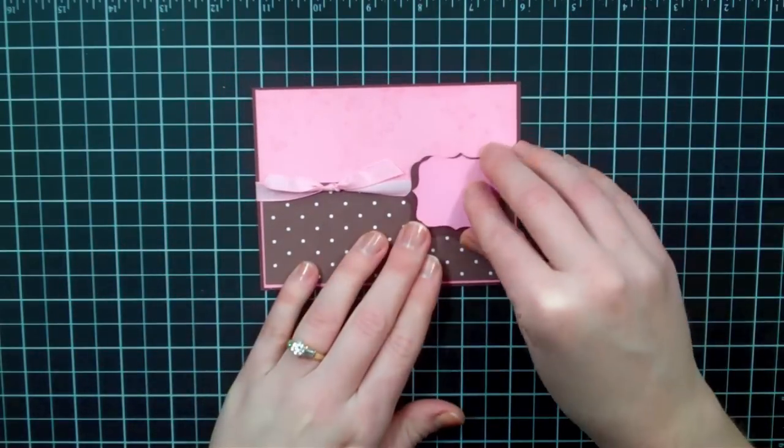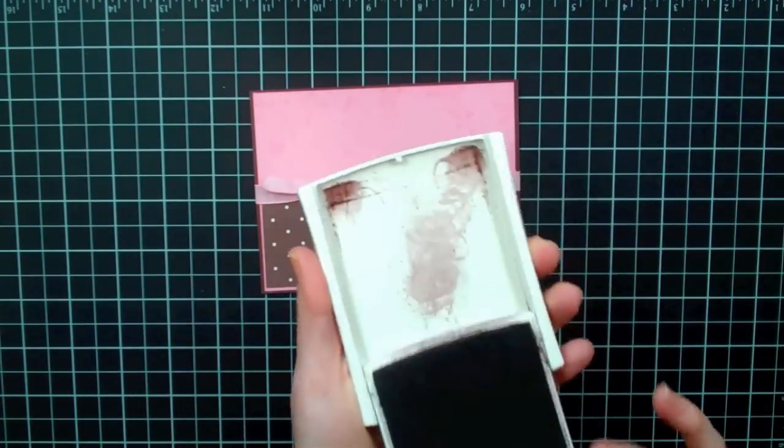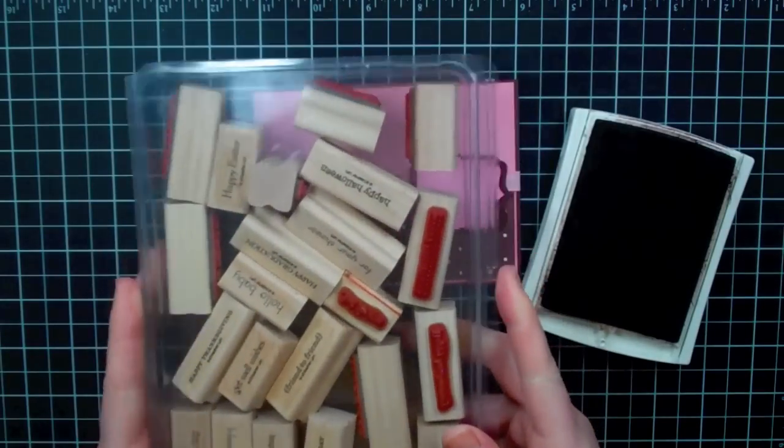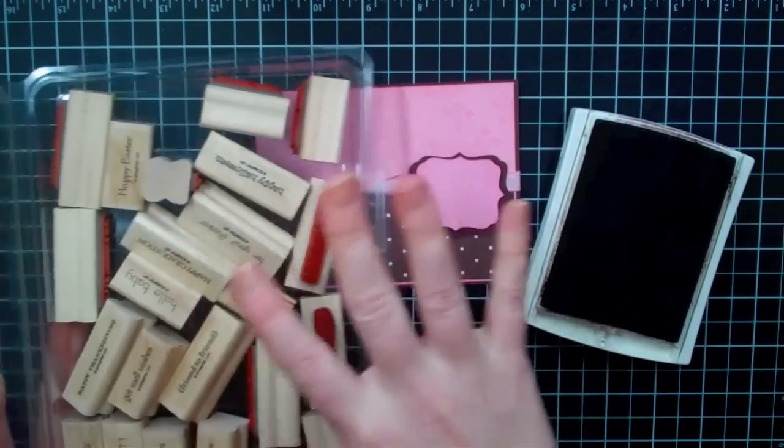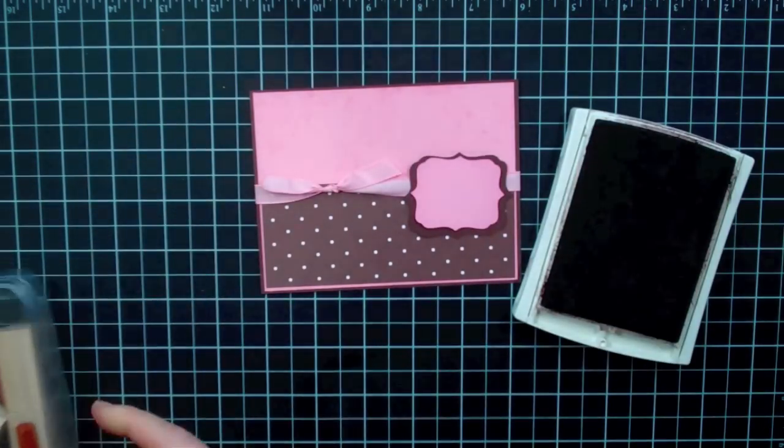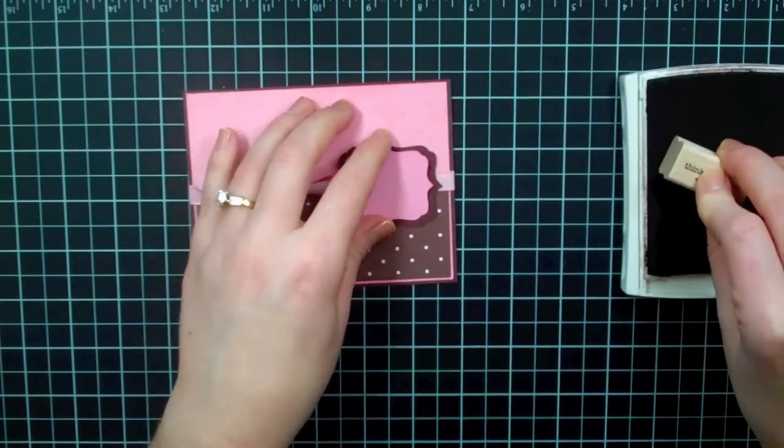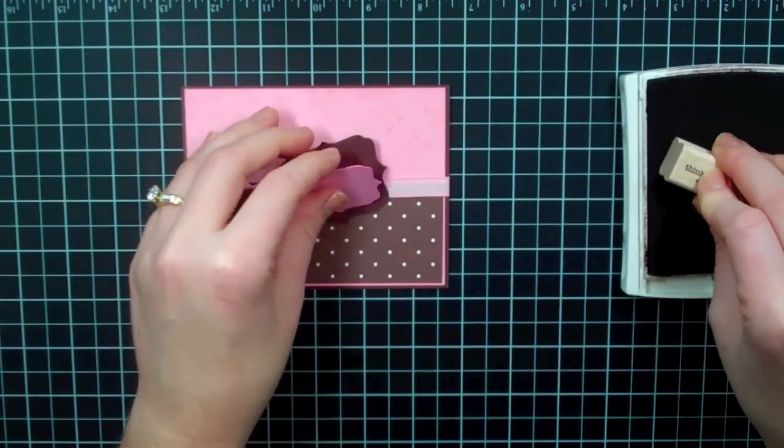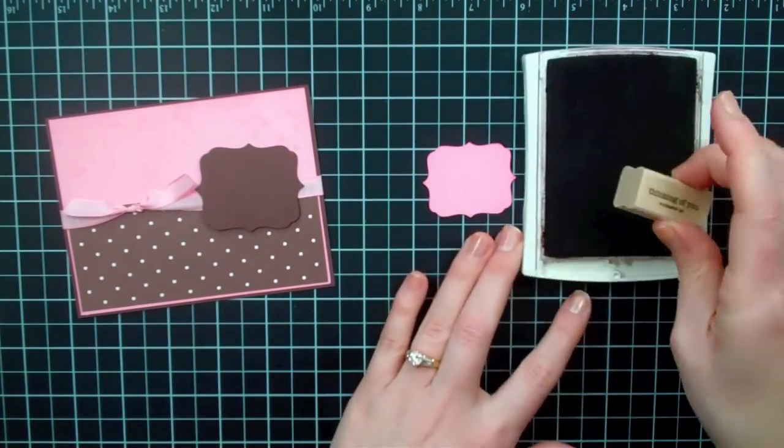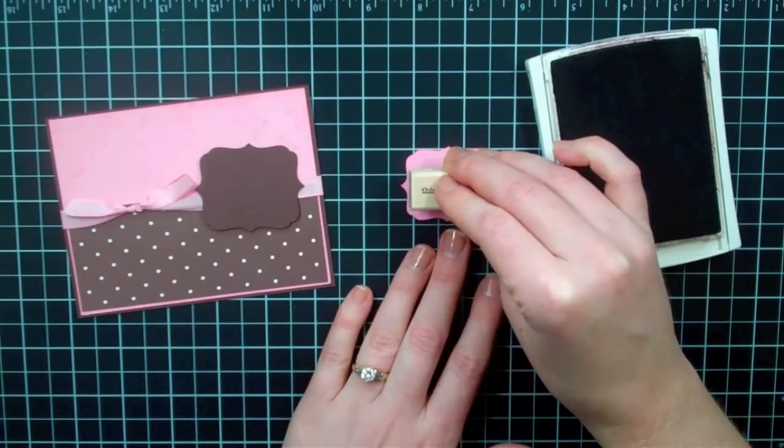So I'm just going to take this and I'll take Chocolate Chip ink and stamp my sentiment on it. Now what's great is that if you have the Teeny Tiny Wishes stamp set, this will take care of all the things that you need. If you want something a little scriptier and kind of foofier, I guess, you could go with the Sincere Salutations. Both are really good starter sentiment stamp sets.